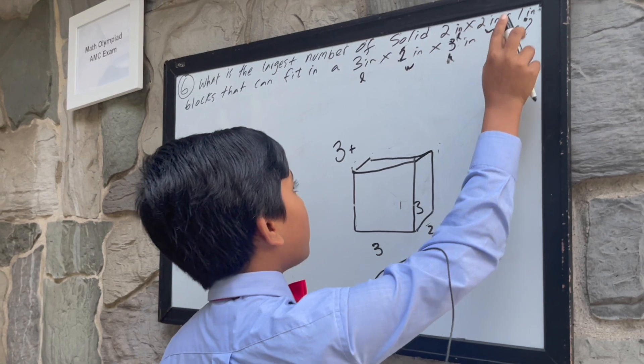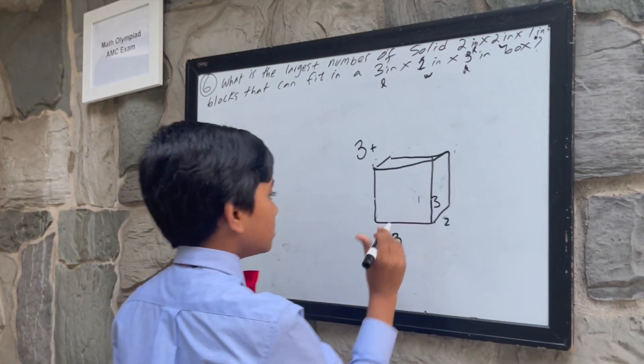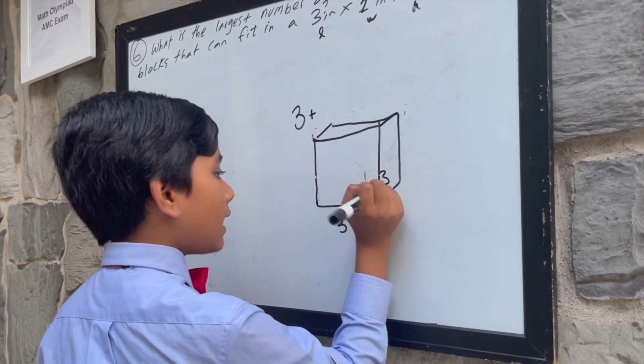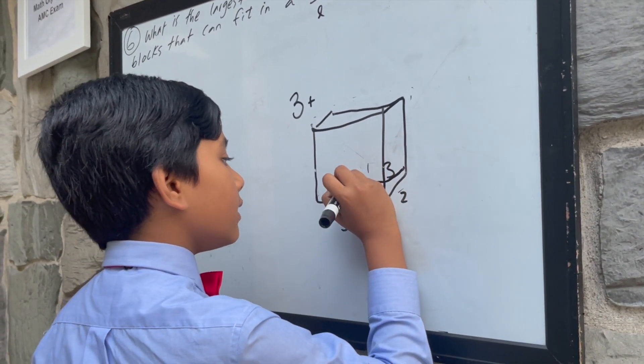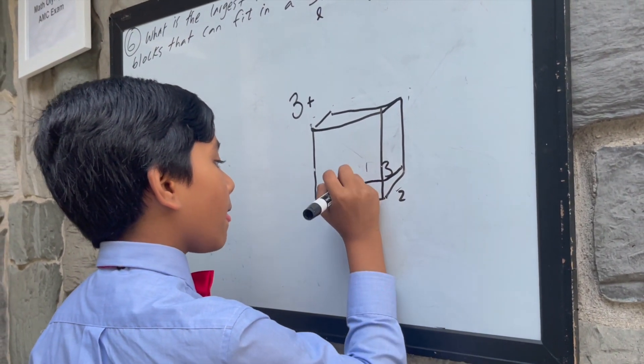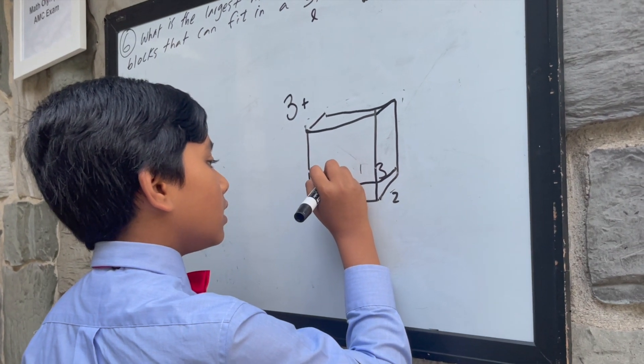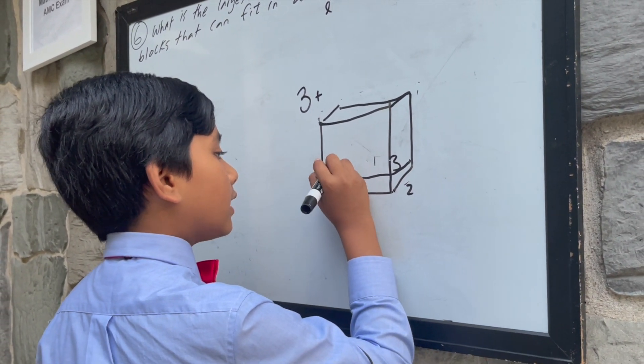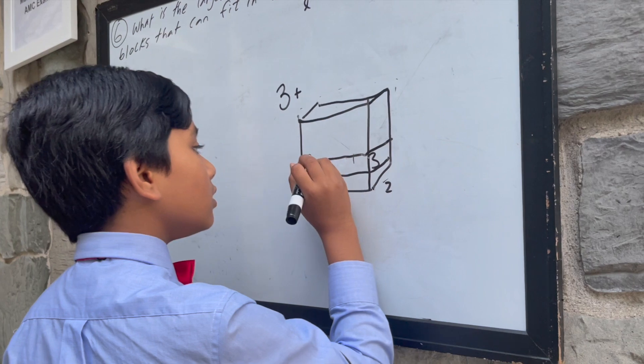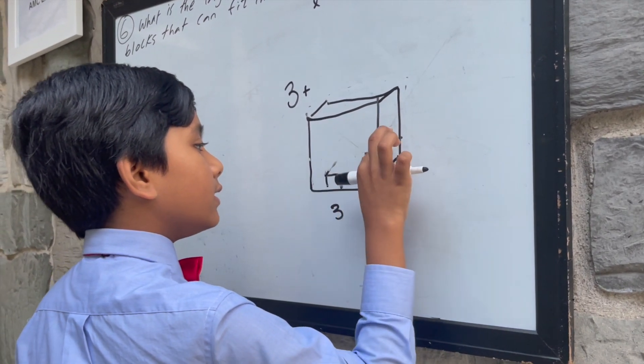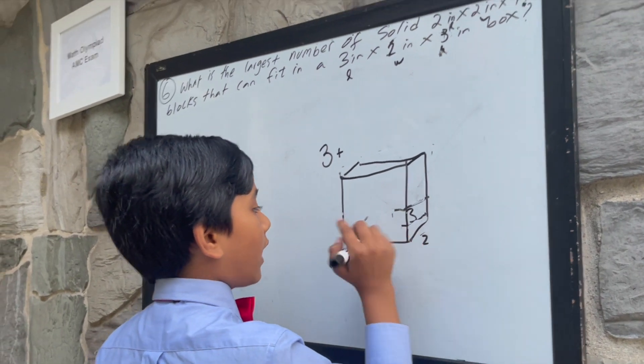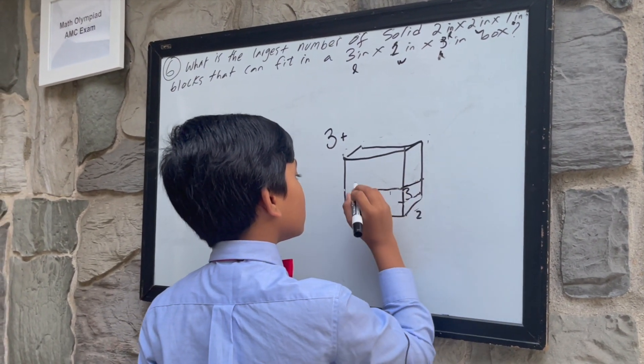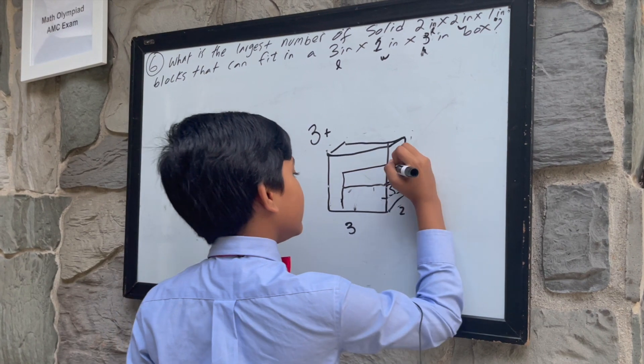Well, remember, we have 2 inch by 2 inch by 1 inch. So that means that there will be 1 that fits in here. And then, you will have another 1 that also fits in here. These are too small for my illustration. Okay. So you have 1 that fits in here, 2 that fits in here.